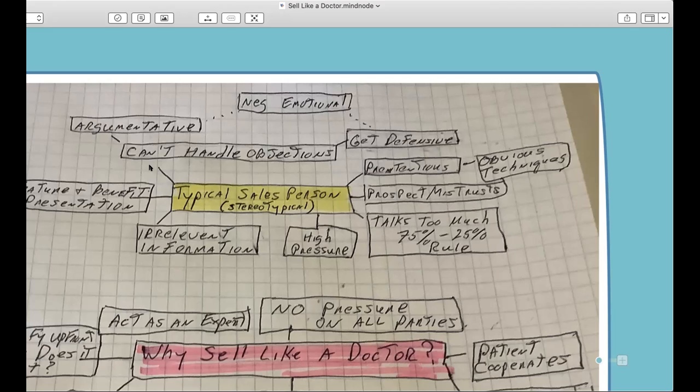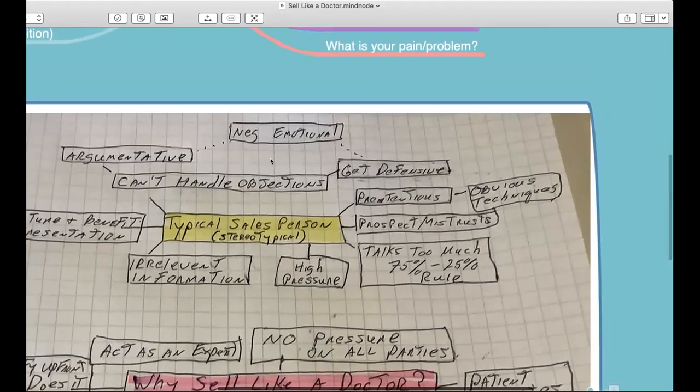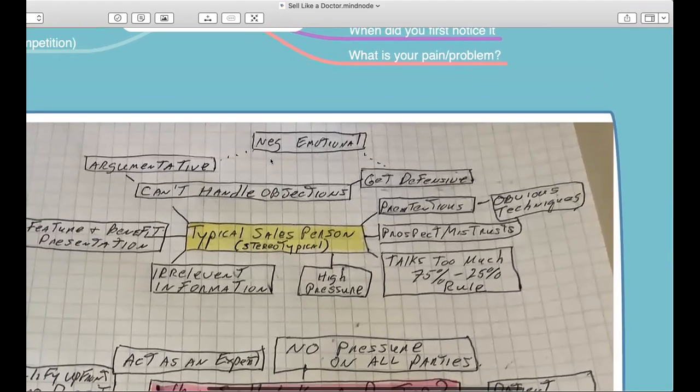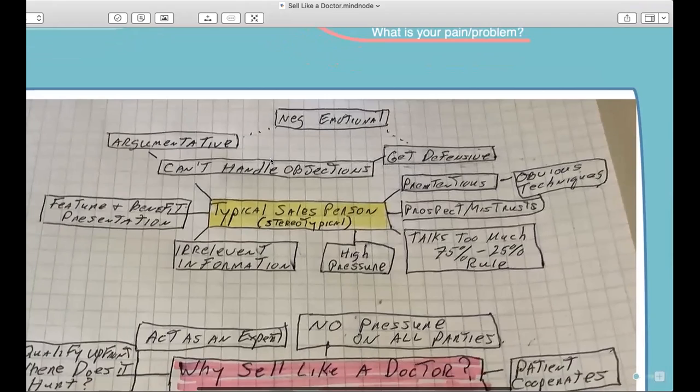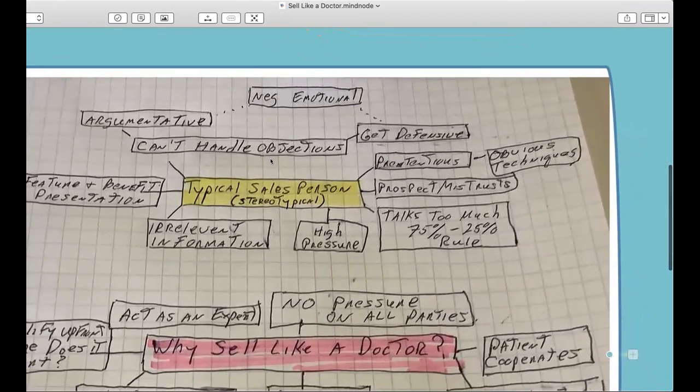So then all of a sudden, how does the typical salesperson handle objections? Do they get negatively, do they get emotional in some situations? Definitely. Especially if it's not the answer that they're looking for. Let's say even in real estate, someone says, oh, I don't want to work with a realtor, leave me alone. Most realtors will probably get defensive and say, why not? What's wrong with realtors?